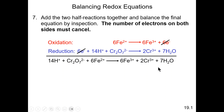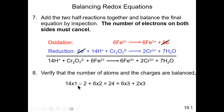What is left is the net equation under acidic conditions. I recommend checking that everything is balanced, including the charges. We have 14 hydrogens on each side, 2 chromiums on each side, 7 oxygens on each side, and 6 Fe ions on each side. For charges: 14 plus minus 2 plus 12 equals 24 on the left, and 18 plus 6 equals 24 on the right. So this is the balanced equation for this redox reaction under acidic conditions.